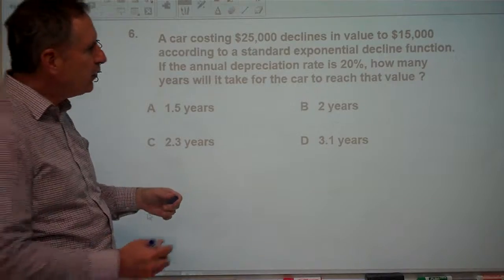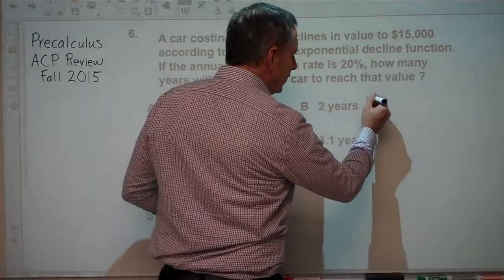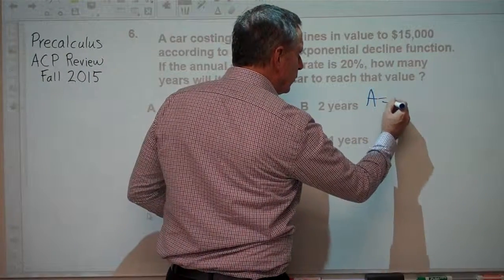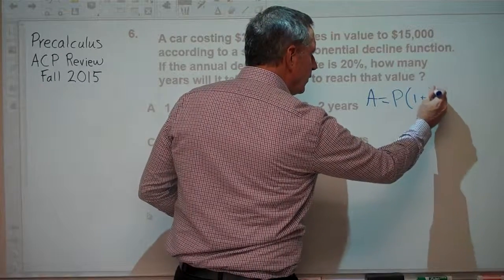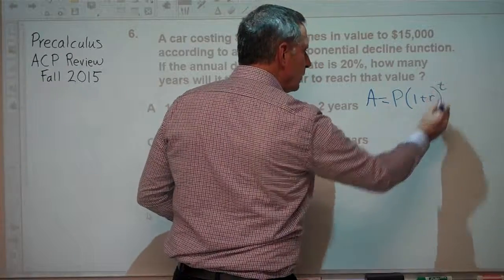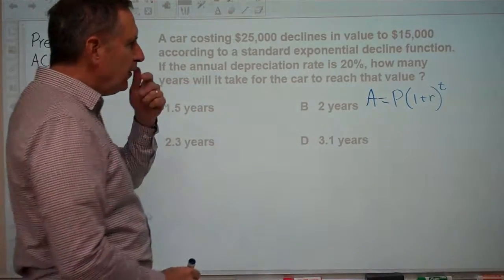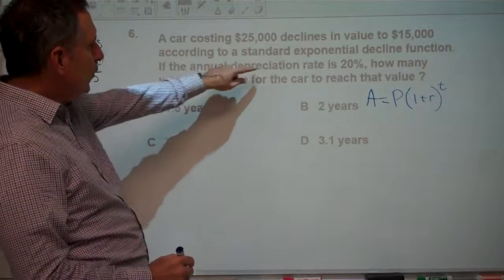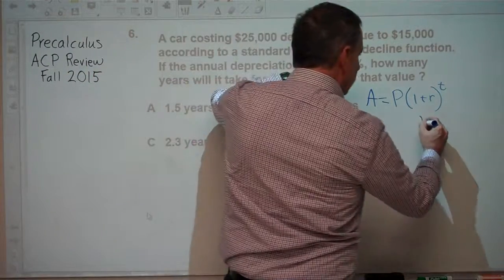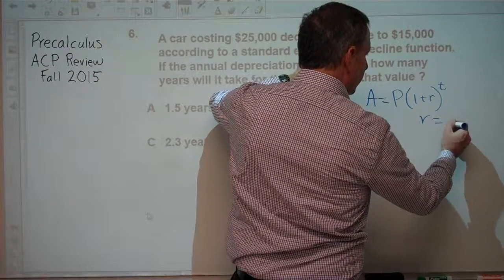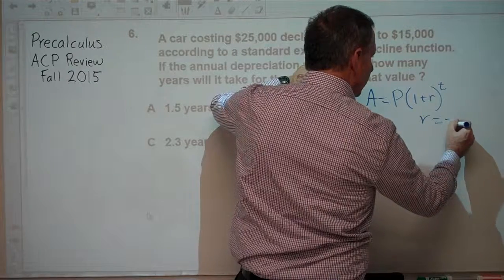Well, our basic exponential equation is the amount equals the principal times 1 plus r to the power of t. In this case, we have a depreciation, so r is going to equal negative 20%, which is negative 0.2.